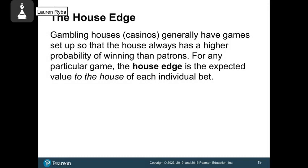One thing to know anytime you go to the casino or gambling houses is they always have games set up so that the house always has a higher probability of winning than a patron. For any particular game, we can find the house edge or what is called the expected value to the house for every individual bet.